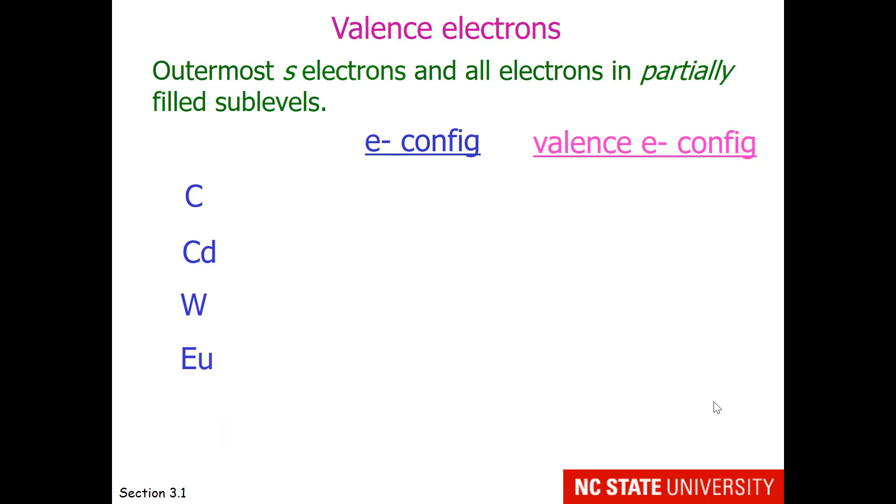Here's a mix-and-match exercise of valence electron configuration compared to full electron configuration. We'll start with carbon. I am showing you the full electron configuration. Think to yourself, what would I like to drop? Well, the helium. So carbon's in column 4, and its valence electron configuration is 2s2, 2p2. How about cadmium? We want outermost s and partially filled sublevels. So goodbye to the krypton core, and also the 4d10 electrons. So cadmium's valence electron configuration is just 5s2.